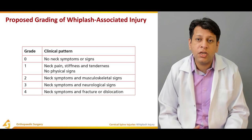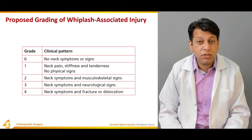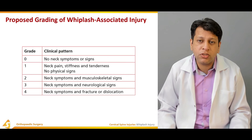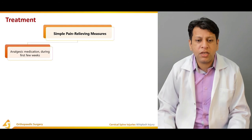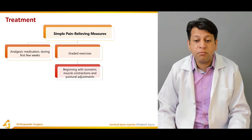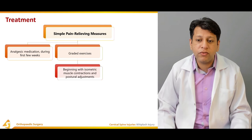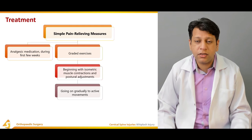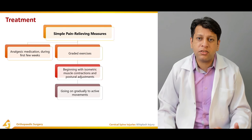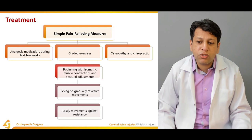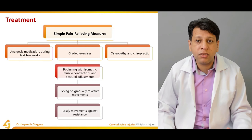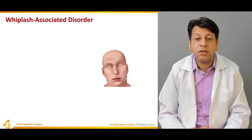When assessing a whiplash injury, it is important to determine whether the cervical spine is stable or not. If it is not stable, intervention may be needed; but if the injury has not compromised spinal stability, it can be treated conservatively. Initial management includes simple pain-relieving measures such as analgesics during the first few weeks. Graded exercises begin with isometric muscle contractions. Physiotherapy starts with posterior adjustments and gradually progresses to more active movements, initially lateral movements, then flexion-extension exercises, and finally movements against resistance to regain muscle power. Osteopathic and chiropractic treatments also have a role in relieving cervical muscle spasm.